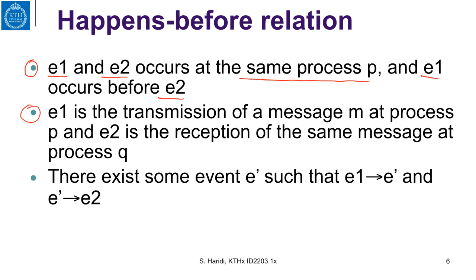Or if E1 is the transmission of a message M at process P, and E2 is the reception or delivery of that message at process Q, then E1 happens before E2. Also, the happens-before relation is transitive: if there exists some event E' such that E1 happens before E' and E' happens before E2, then E1 happens before E2.